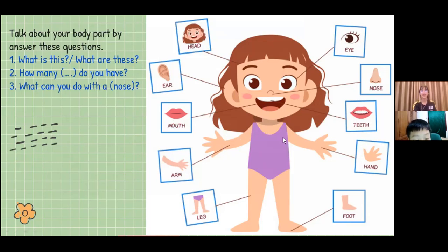Good job. What are they? They are my arms. I have got two arms. I can hug with my arms. What are they? They are my hands. I have got two hands. I can clap with my hands. Very good.